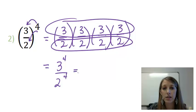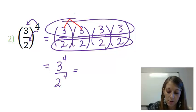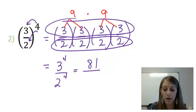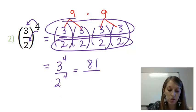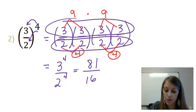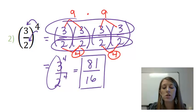3 to the fourth power is 3 times itself 4 times. So 3 times 3 gives me 9, and then 9 times 9 gives me 81 — so 3 to the fourth power is 81. The denominator: 2 to the fourth power — 2 times 2 gives me 4, and 4 times 4 gives me 16. So my denominator is 16. See if you can reduce, but since 81 and 16 share no common factors, my final answer is 81 over 16.